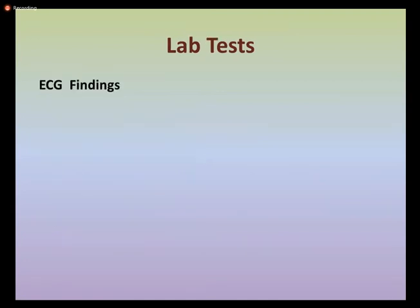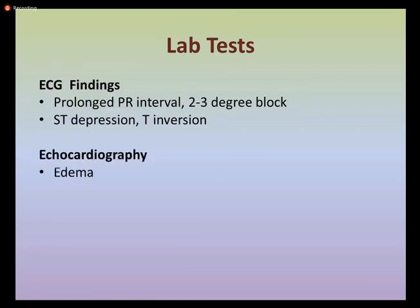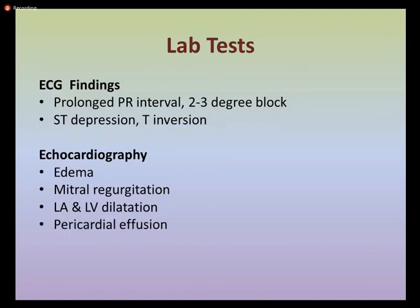ECG findings include prolonged PR interval and AV block of second to third degree, as well as ST depression and T-wave inversion. Echocardiography shows edema, mitral regurgitation, left atrium and left ventricle dilatation, pericardial effusion, and decreased contractility.